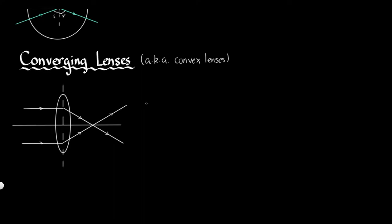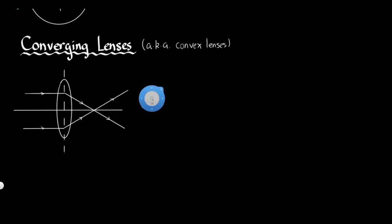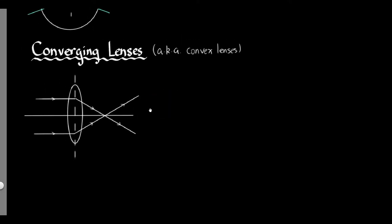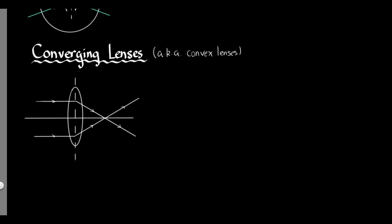So today I'd like to talk a little bit about converging lenses, or as you might have known it, convex lenses. The reason why it's called converging lenses is obviously because it converges the light — basically, it brings parallel rays of light beams together.